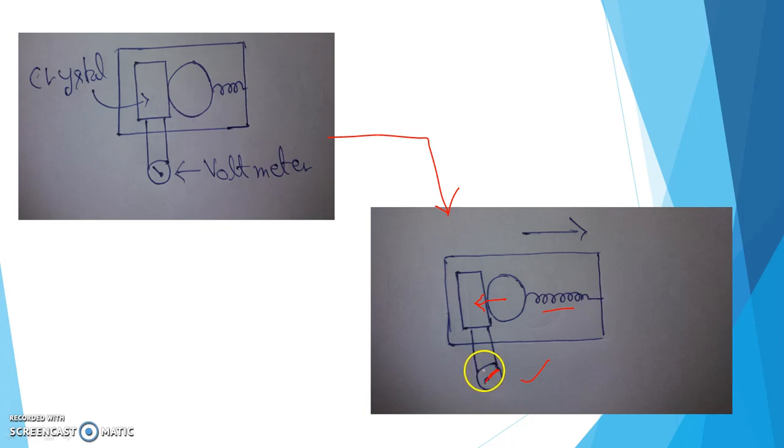By measuring the voltage, we can get an idea that how much force is applied on the crystal. And the force is basically due to the pseudo force which is created due to the acceleration of the box. So from the measurement of the voltage which is created by the crystal, we can get an idea of the acceleration in which the whole box is accelerated in this direction.